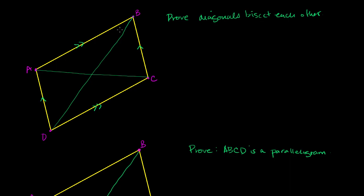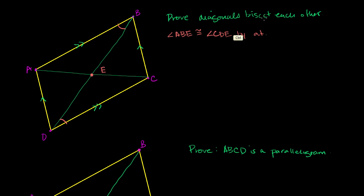If we focus on diagonal DB, we see that it intersects DC and AB. Since we know those are parallel — this is a parallelogram — we know that alternate interior angles must be congruent. So that angle must be equal to that angle there. Let me label that middle point E. So we know that angle ABE must be congruent to angle CDE.